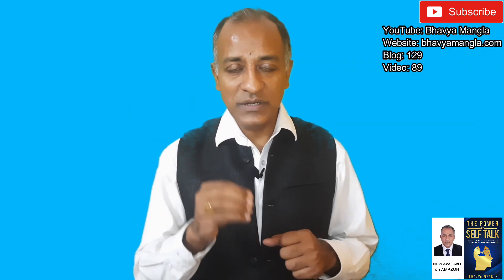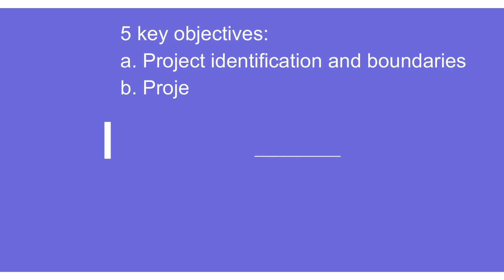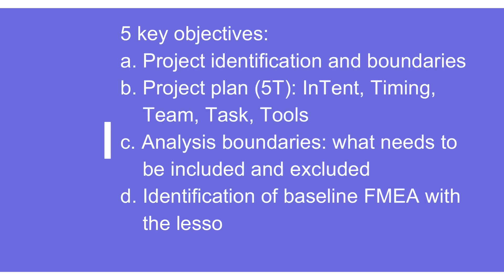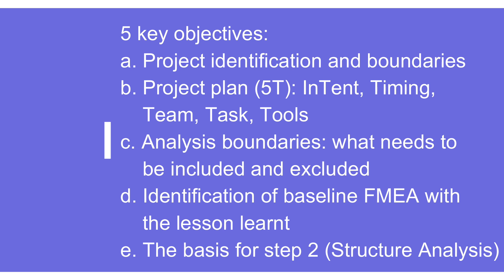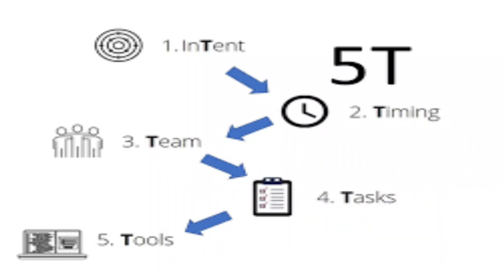Let's start with step number one, planning and preparation. There are five key objectives. The first is project identification and boundaries — we should know the customer requirements, what the customer is expecting, and what boundaries we are talking about: design FMEA, process FMEA, machine FMEA. There are also five T's to take care of for an effective FMEA: intent, timing, team, task, and tools.